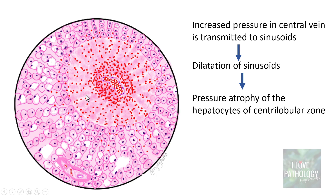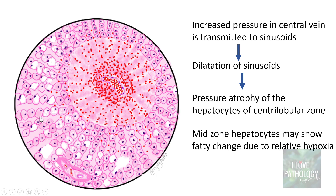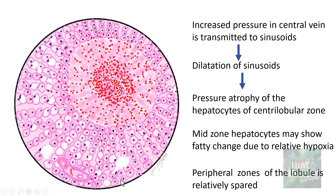Once there is dilatation and congestion of hepatic sinusoids, there will be pressure atrophy of all the hepatocytes particularly in the centrilobular zone, whereas the mid-zone hepatocytes may show fatty change due to relative hypoxia, and the peripheral zone of the hepatic lobules is relatively spared. This is essentially the pathogenesis and findings in chronic venous congestion of the liver.